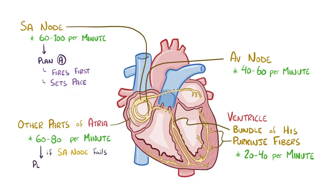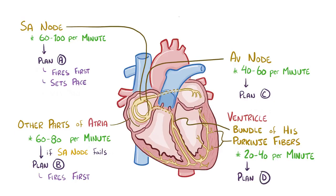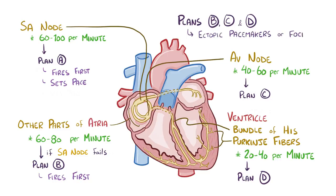If the SA node doesn't fire, then atrial pacemaker cells get a chance to start firing and set the pace, resetting the pacemaker cells in the AV junction and ventricle. If the atrial pacemaker cells fail, the AV junctional pacemaker cells take over. And if all other pacemaker cells fail, ventricular pacemaker cells — with a firing rate of 20–40 per minute in the bundle of His and Purkinje fibers — start pacing the heart. Once any of these latent pacemaker cells steps up, it's called an ectopic pacemaker or ectopic focus, meaning the pace is set from a place other than the usual SA node.